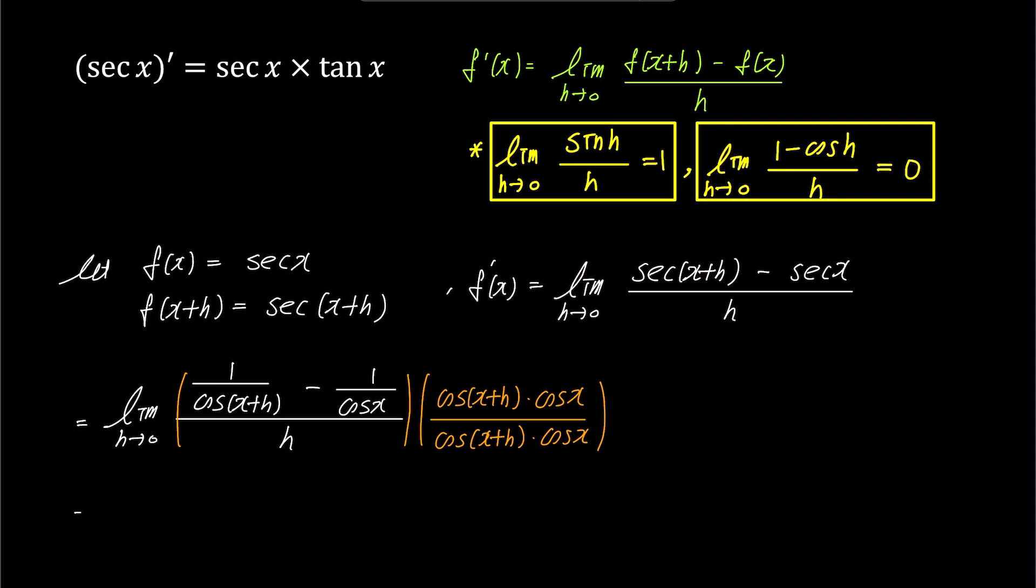This transformation leads to the numerator of the limit as h approaches 0 becoming cosine x minus cosine x plus h, and the denominator becomes h times cosine x plus h times cosine x.